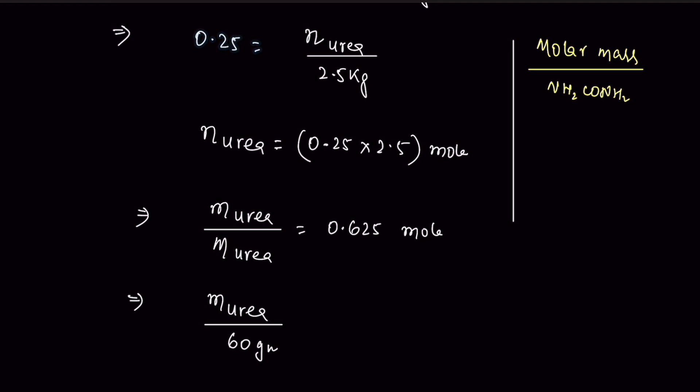So we have 2 nitrogen. Nitrogen atomic mass is 14 times 2. Hydrogen is 4, so atomic mass of hydrogen is 1 times 4, and carbon atomic mass is 12. It's one atom. Oxygen is 16 times 1.